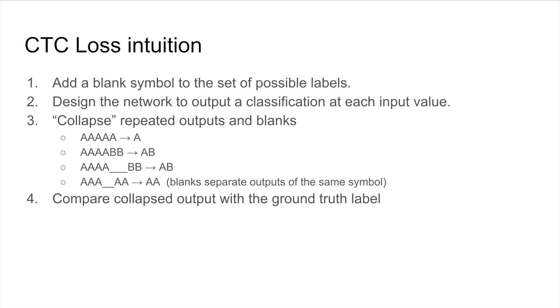So specifically, we're going to have a set of labels. Think about this, this could just be the alphabet, and then a labeling is going to be a sequence of these labels. And so right now, we're going to add a blank symbol to our set of possible labels, and then we're going to design the network such that at each output, we output a classification of one of these labels. So, we're going to have a sequence of labels, and then we're going to collapse this sequence, with the rule being that repeated labels all collapse to that singular label, and this includes the blank.